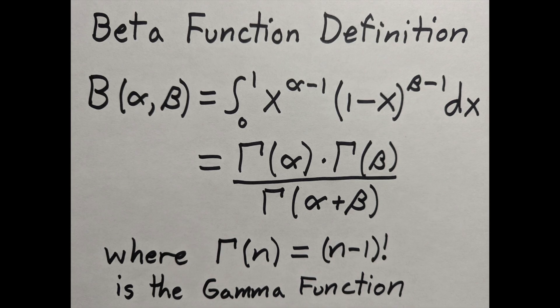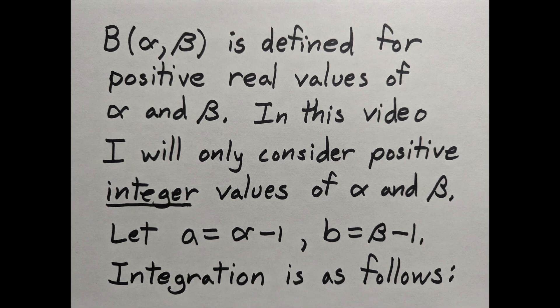I'm going to show these two definitions match by performing the integral. The beta function is actually defined for positive alpha and beta, but I'm only going to use integer alpha and beta in my proof. I'm going to write a is alpha minus 1 and b is beta minus 1.